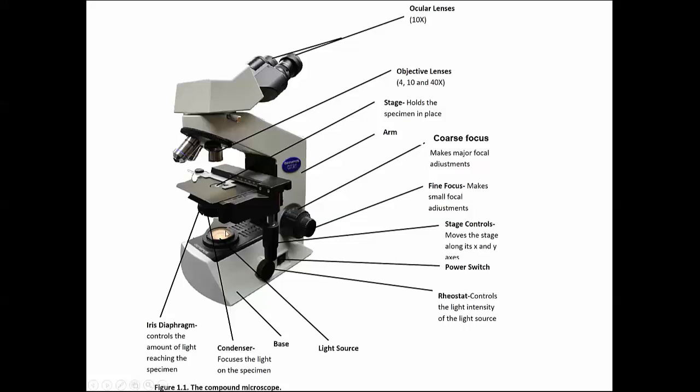The other thing students often do is have the light way too bright and they either can't see, it hurts their eyes, or the specimen is just not very detailed. So dimmer is always better. But you can control that easily with the iris diaphragm and then if need be with the rheostat.